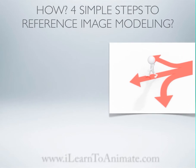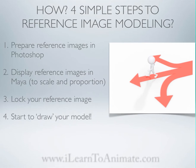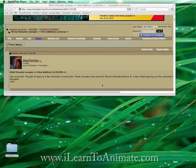So how do we do this reference image modeling? There are four simple steps to follow. First, prepare reference images in Photoshop. Second, display your reference images in Maya to scale and proportion — this is very, very important. Thirdly, lock your reference image. And lastly, you are ready to draw your model.